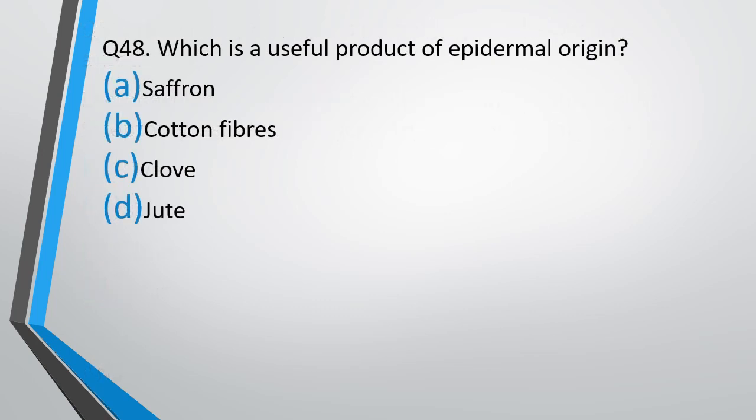Question No. 48. Which is a useful product of epidermal origin? Option A: Saffron. Option B: Cotton fibers. Option C: Clove. Option D: Jute. The correct answer is Option B: Jute.